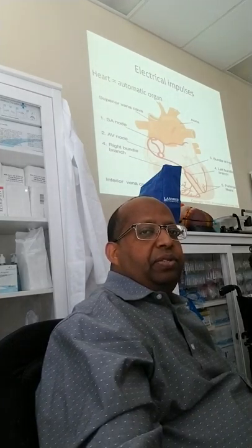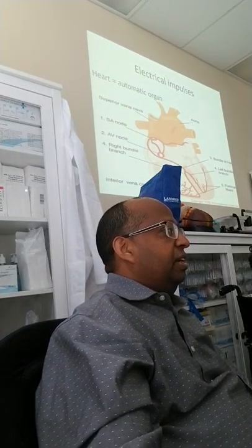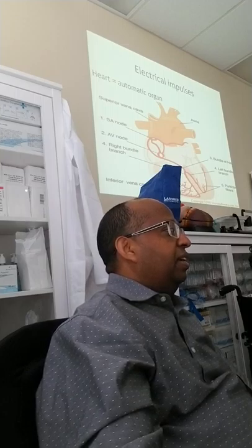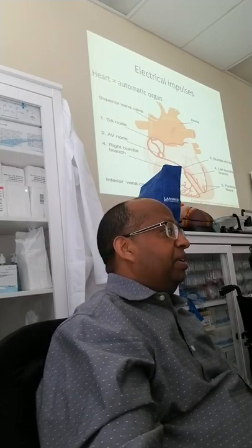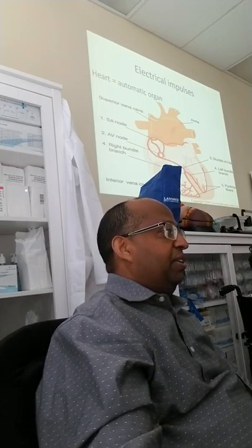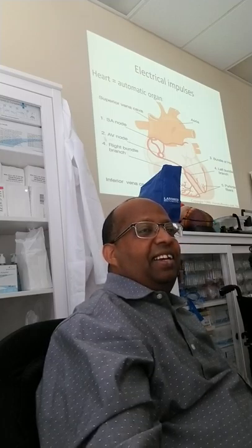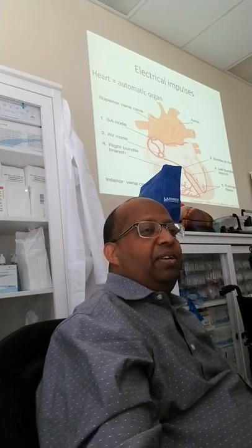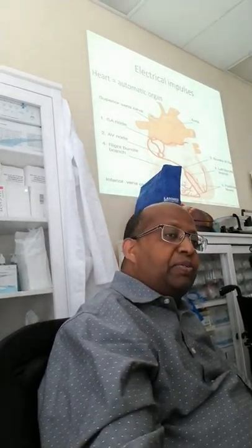These structures are the SA node, AV node, bundle of His — His is a name, not possessive — right and left bundle branch, and Purkinje fibers. That's five. Knowing this is very important, because EKG depends on this.